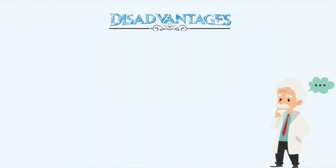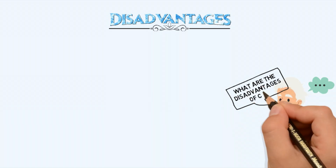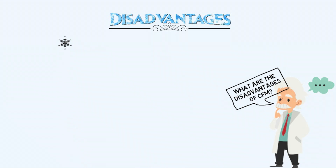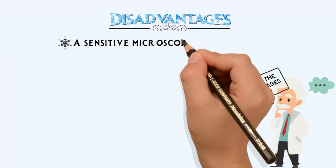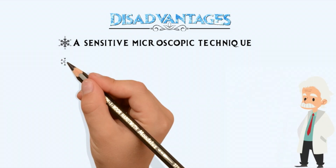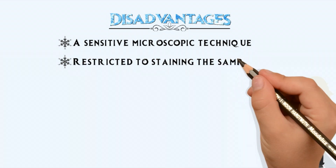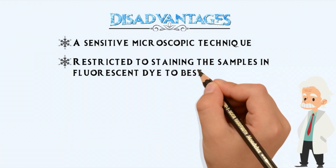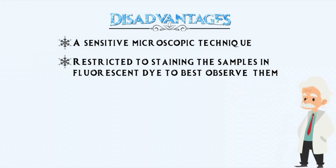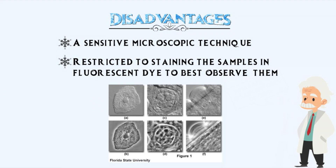What are the disadvantages of CFM? For starters, CFM is a sensitive microscopy technique. CFM is also restricted to staining the samples with fluorescent dye in order to best observe them, while microscopy techniques such as phase contrast are best used on colorless specimens and do not require samples to be harmed in any way, including fixing or staining the cells.